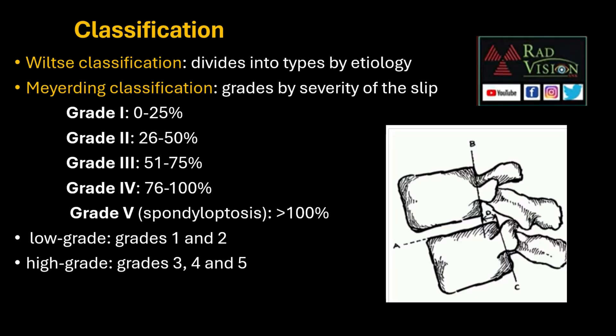There are two classifications for spondylolisthesis. The Wiltse classification divides it into types by etiology. The Meyerding classification grades spondylolisthesis by severity of slippage: Grade 1 is 0–25%, Grade 2 is 26–50%, Grade 3 is 51–75%, Grade 4 is 76–100%, and Grade 5 is more than 100%, also known as spondyloptosis.